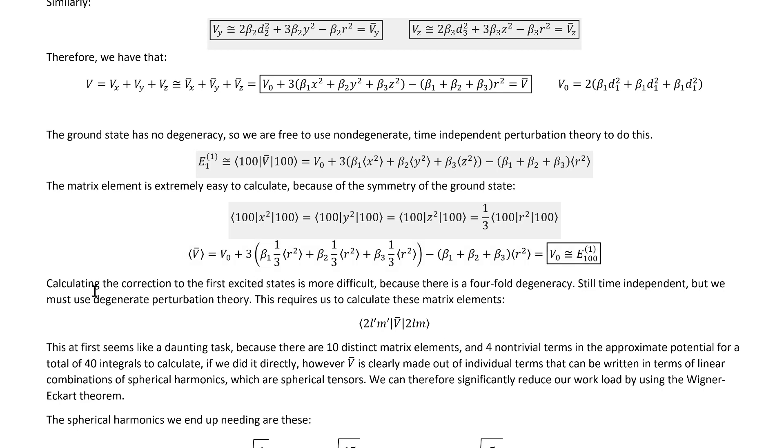Now with the ground state finished, we're ready to move on to the first excited states. Calculating the correction to the first excited states is more difficult, because there's a four-fold degeneracy. Well, of course, we're still going to be using time-independent perturbation theory, because the potential hasn't changed. We must use degenerate perturbation theory, which leaves us with the possibility of having to diagonalize a matrix. And we do actually end up having to do that, although it's not as bad as a full 4x4 matrix.